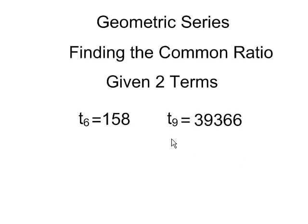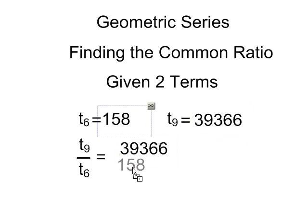This is fairly simple to do by division. What I'm going to do is take term 9 and divide it by term 6 and we'll see what happens. So that's equal to 39,366 divided by 158, which is equal to 27.